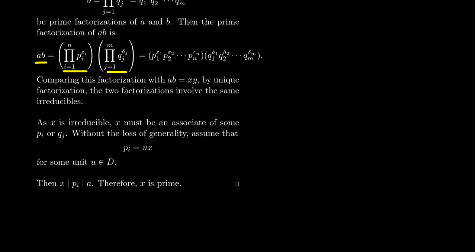Well, what does this mean then? So this means that x divides p_i, but p_i was a factor of A. Divisibility is transitive. So if x divides p_i, and p_i divides A, that means that x divides A, right?